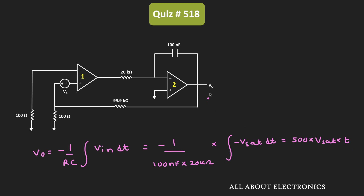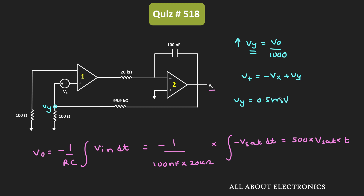As time t increases, the output voltage Vout will increase. We have seen that Vy is equal to Vout divided by 1000, so as Vout increases, Vy will also increase. Since V+ equals minus Vx plus Vy, as Vy increases, V+ will also increase. Whenever Vy becomes 0.5 millivolt and V+ becomes greater than V-, this will happen whenever Vout crosses 0.5 volt.